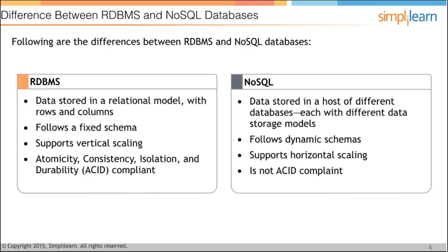Point number two: RDBMS follows a fixed schema. In a relational database, suppose there is a table with columns ID, name, A, H, X, and salary — all rows must have all five columns. If there is no value for a particular row, null has to be added in those fields. Whereas NoSQL follows a dynamic schema — you don't need to worry about the schema. If the first record has three columns, fine. If the second has 300 columns, fine. If the fourth has only one column, that's fine too.